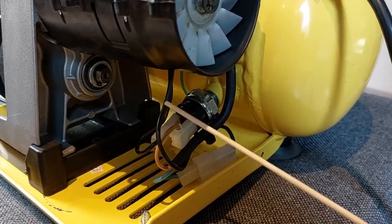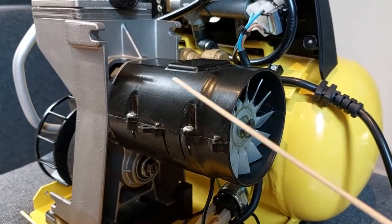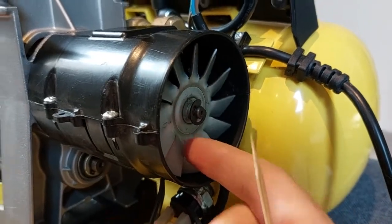So behind the pressure sensor we'll find the electric motor. This part is the actual motor. And this is a cooling fan mounted on its shaft to prevent overheating.